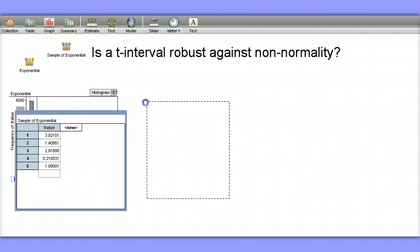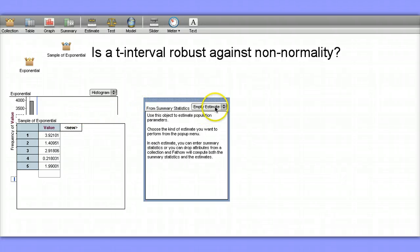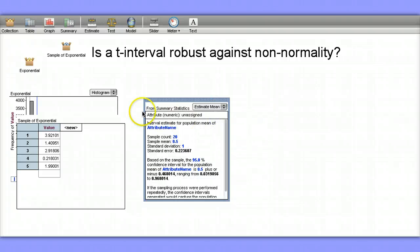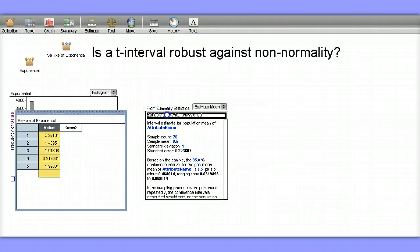Let's create a confidence interval using these 5 values. So I drag an estimate onto my desktop here, and I'm going to estimate the mean. And I want to actually use these values.